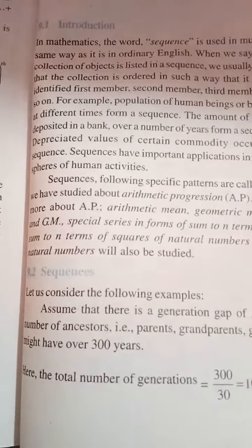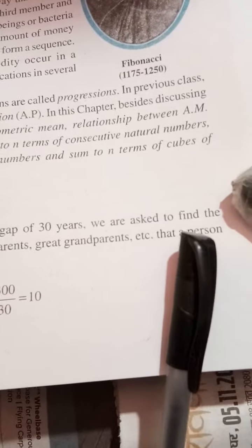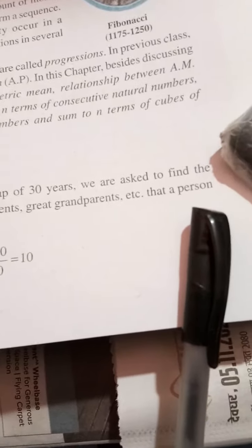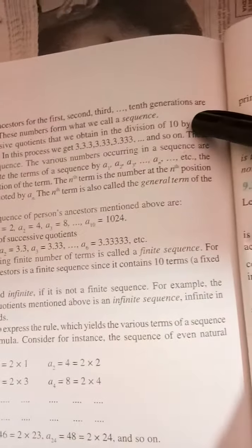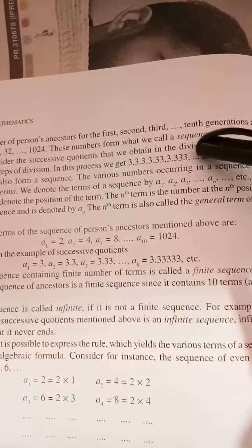Here you can see the sequences. Let us consider the following example: assume that there is a generation gap of 30 years. We are asked to find the number of ancestors — parents, grandparents, great-grandparents, etc. — that a person might have over 300 years. The total number of generations is 300 divided by 30, which equals 10. The number of a person's ancestors for the 1st, 2nd, 3rd, up to 10th generation are 2, 4, 8, 16, 32, 64, 128... These numbers form what we call a sequence.